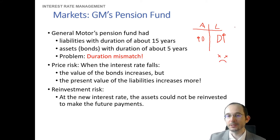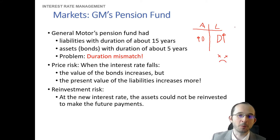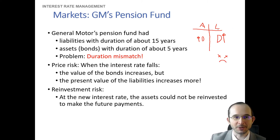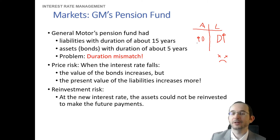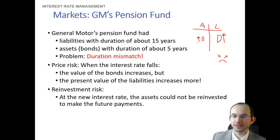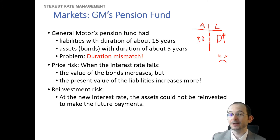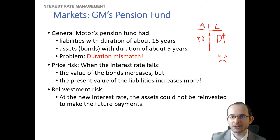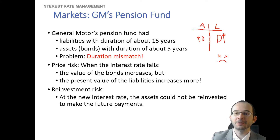Of course, the upside would be that if interest rates actually rose, the liabilities would go down by more than the present value of assets, and this pension fund would be in surplus. But that is probably not enough of an upside to offset the disaster that would happen if interest rates do fall. And nobody can predict interest rate changes with certainty. So as a prudent pension manager, you have to take into account this potentially serious shortfall.